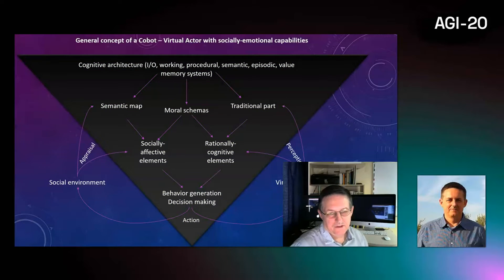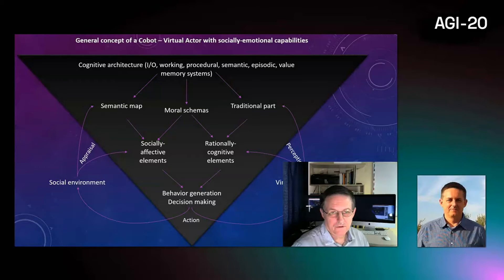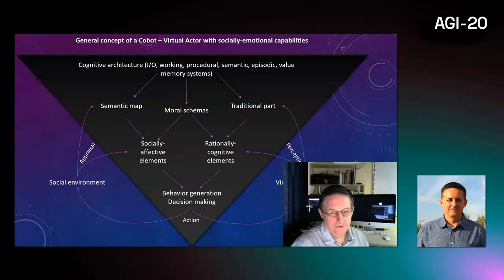This is the essence of our approach implemented in the EBAICA Cognitive Architecture, which combines two mechanisms of reasoning — emotional and rational, or traditional. Furthermore, the emotional part includes two parts on its own.